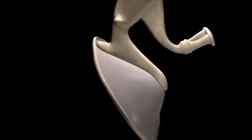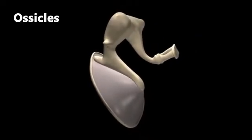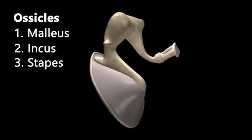The tympanic membrane is cone-shaped and articulates with a chain of three bones called the auditory ossicles. They consist of the malleus, the incus, and the stapes. The movements of the tympanic membrane vibrate the ossicles, passing on the information of frequency and amplitude.